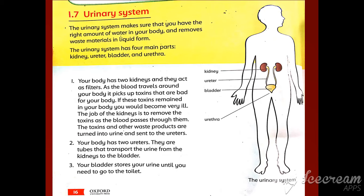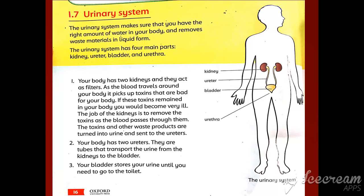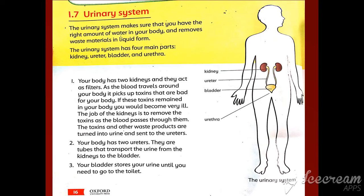The urinary system makes sure that you have the right amount of water in your body and removes waste materials in liquid form. The function of the urinary system is that your body has the right amount of water and it removes waste materials in liquid form.